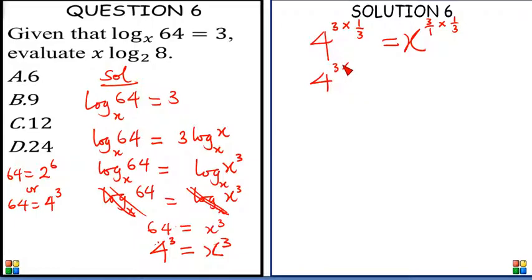3 cancels 3 there. 3 divided by 3, and over here we have times 1 over 3. At the end of the day we are left with 4 is equal to x. But really we are not asked to find x. We are asked to find x log 8 base 2. So let's move on.